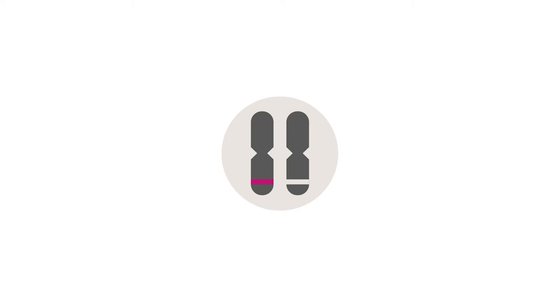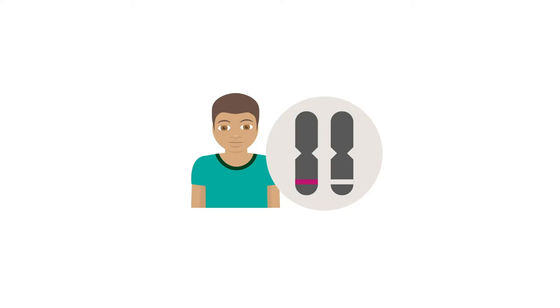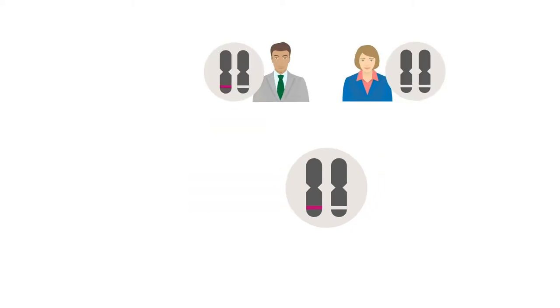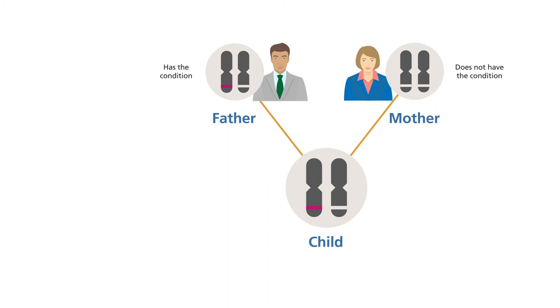An autosomal dominant condition requires only one copy of an altered gene for the associated condition to present. In this case, one parent has the condition, the other does not.